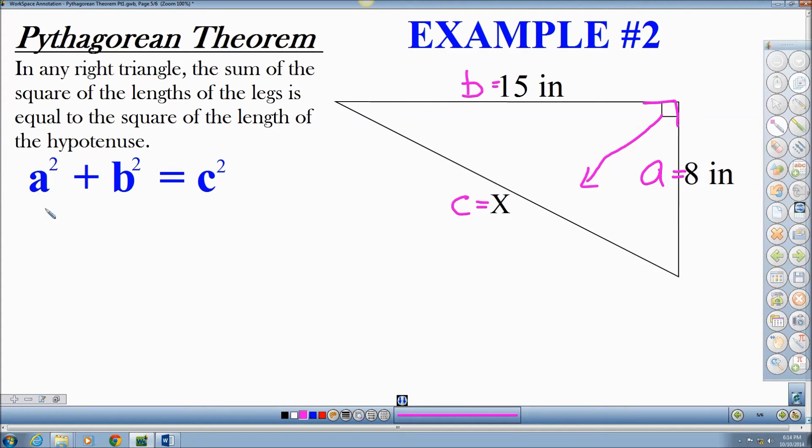So A equals 8 inches. So I'm going to put 8 here. That gets squared. B is 15. So 15 gets squared. And this, once again, equals X. And that will also be squared.